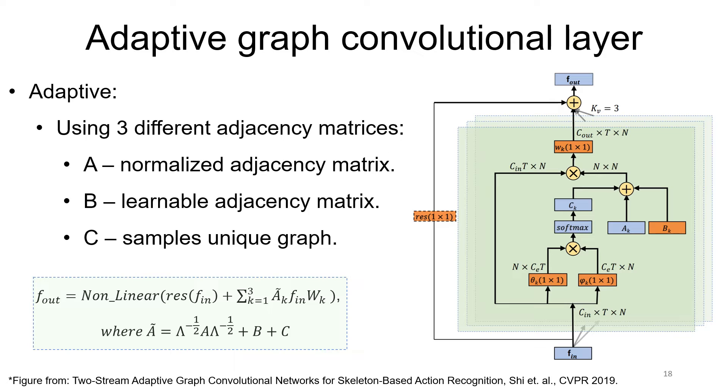That way, the learnable model has higher flexibility and therefore can better utilize the training data. The adaptive graph convolution layer is consisted of A, a fixed normalized adjacency matrix.